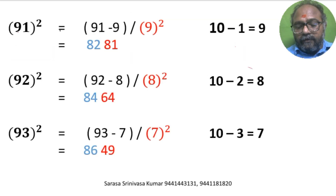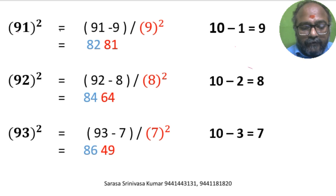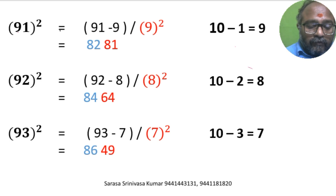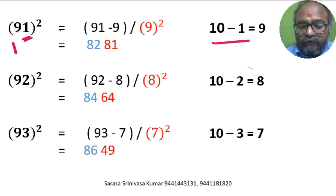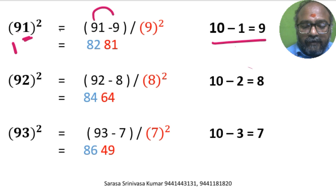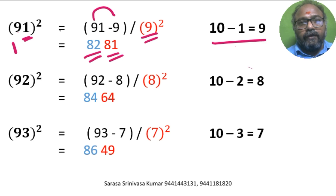Now we find the square of 91. Units digit is 1. So 10 minus 1 is 9. 91 minus 9 is 82. 9 square is 81. So 82, 81 is the answer.